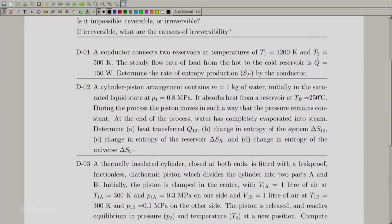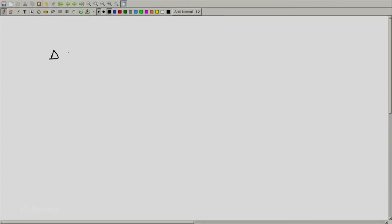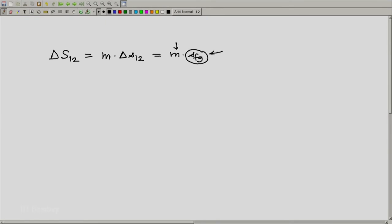Now we are also asked to determine the change in entropy of the system, and the change in entropy of the reservoir. Again we notice here that the initial state is saturated liquid, the final state is dry saturated vapor. So if we determine the change in entropy delta S12, this will be M into delta specific entropy 12 which will be M into SFG. Why SFG? That is only because 2 is dry saturated vapour and 1 is saturated liquid. And again mass is given to be 1 kg, SFG is to be read off at 0.8 MPa. That gives us delta S12.